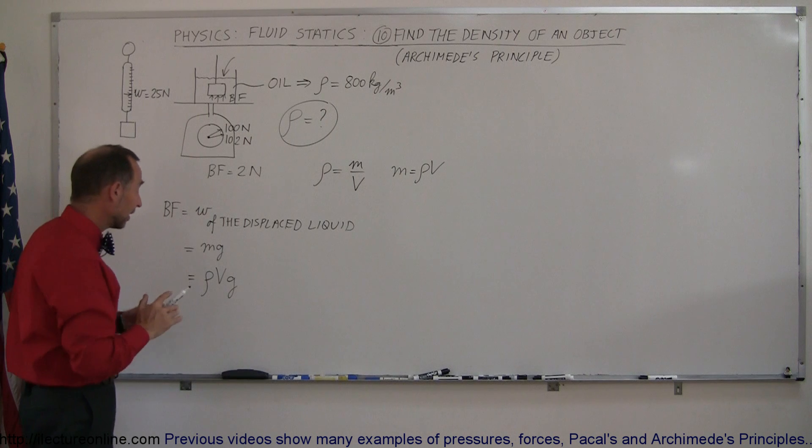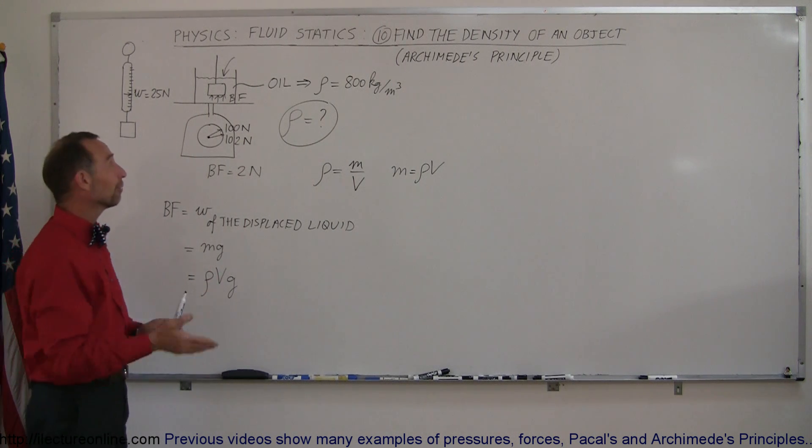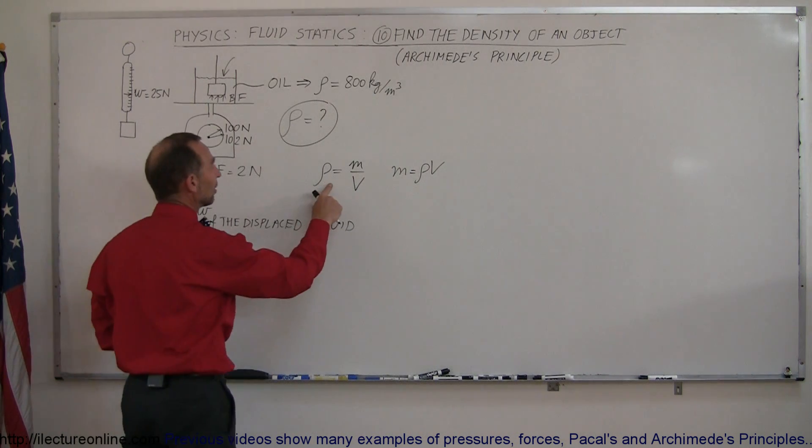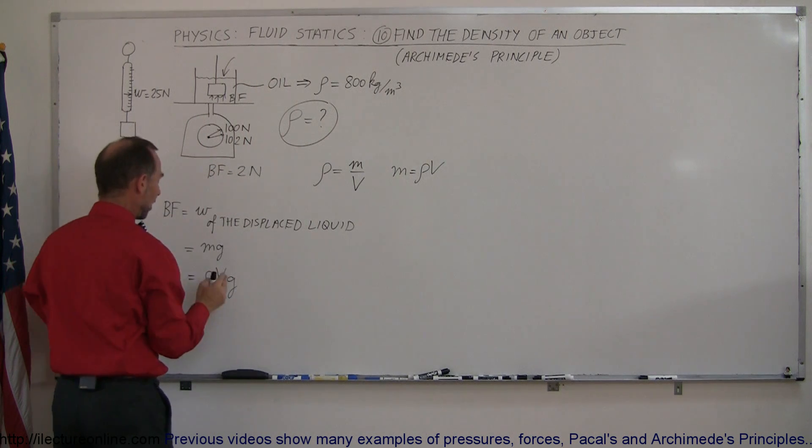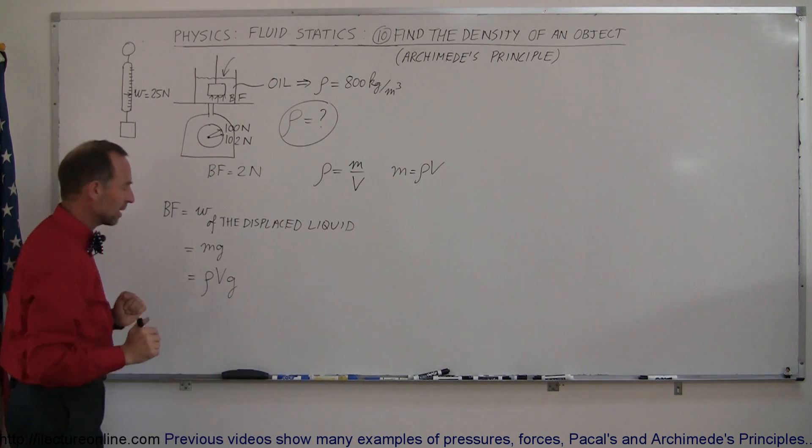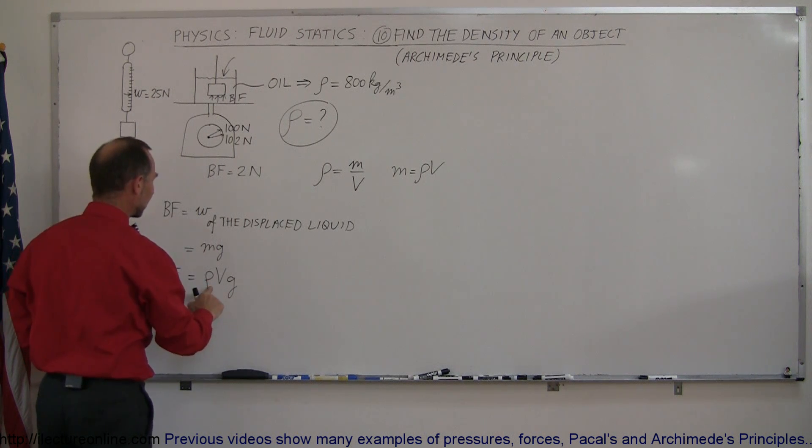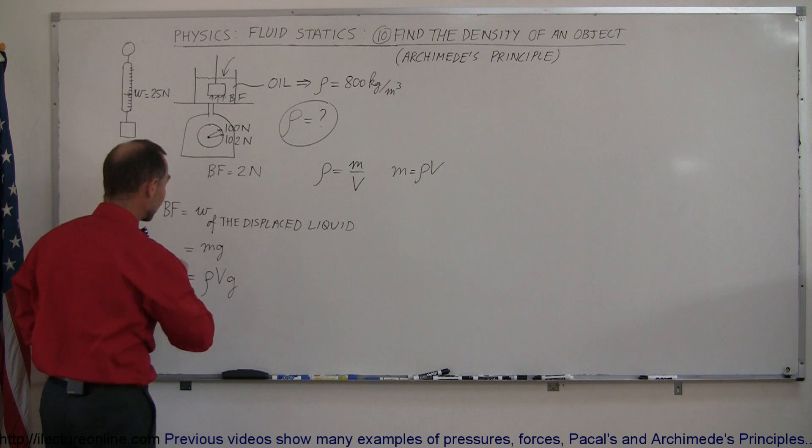And it also, of course, means that the volume of the displaced liquid is equal to the volume of the object. And that's what we're trying to find, because to find the density, we need to know the mass and the volume. The mass can be found from this, but the volume has to be found from Archimedes' principle. So we have the buoyancy force is equal to the density of the liquid times the volume of the liquid, which is also the volume of the object, times g.